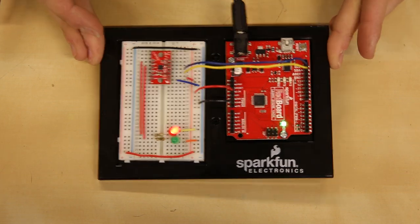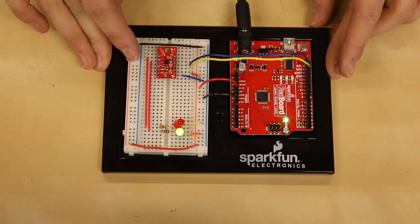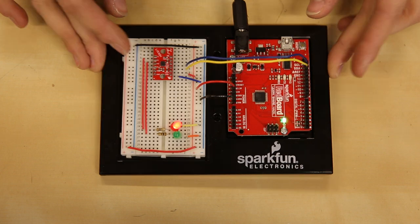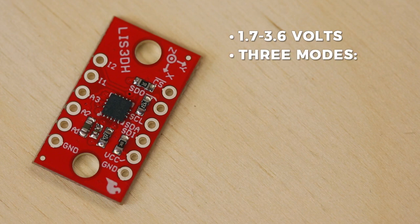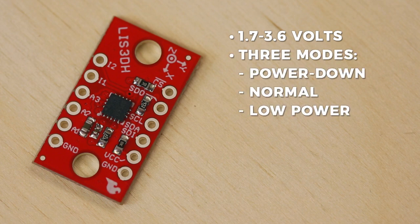It is capable of measuring accelerations with output data rates from 1 Hz to 5 kHz. The LIS-3DH operates at 1.7 to 3.6 volts and provides three different operating modes: power down, normal, and low power mode.